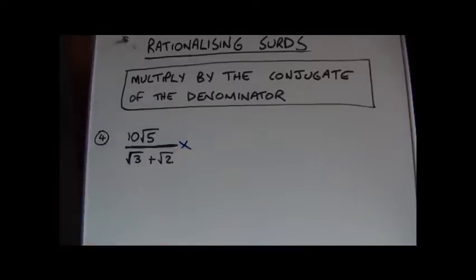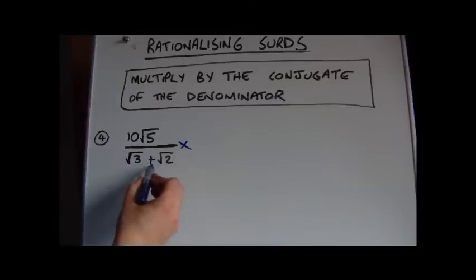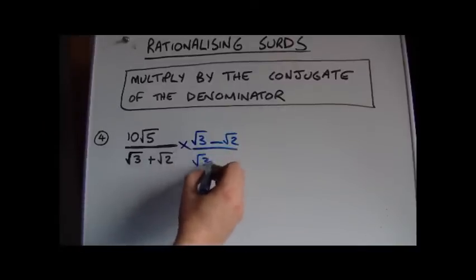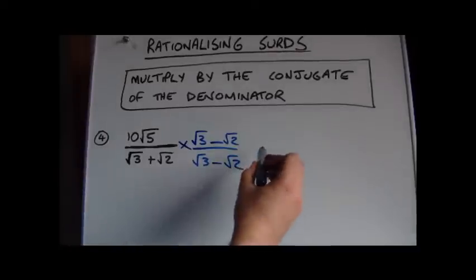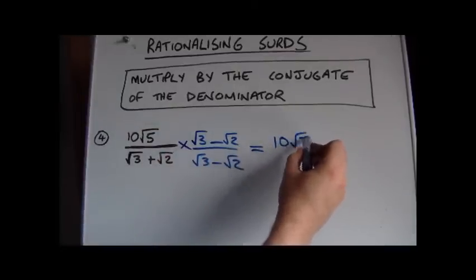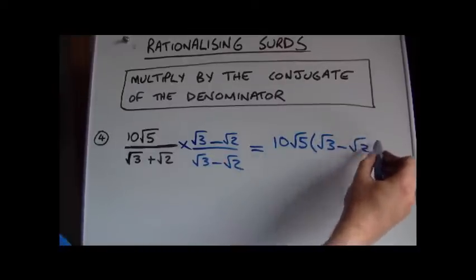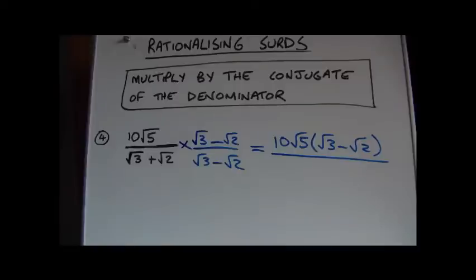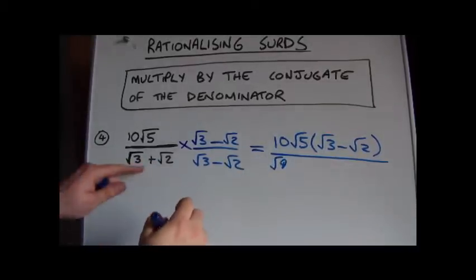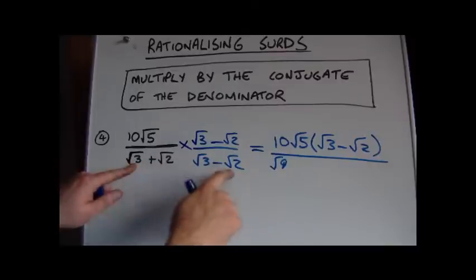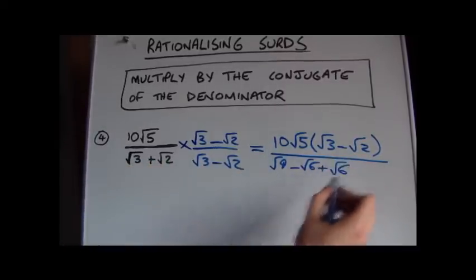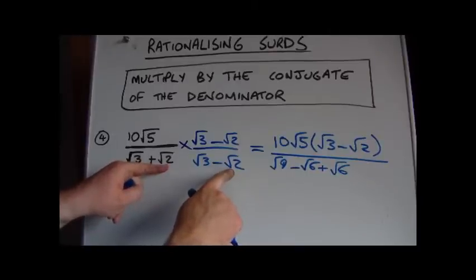One more example using the same method. We multiply the top and bottom by the conjugate of the denominator. The denominator is root 3 plus root 2, so the conjugate changes the plus to a minus: root 3 minus root 2. Expanding the bottom: root 3 times root 3 gives root 9; root 3 times minus root 2 gives minus root 6; plus root 2 times root 3 gives plus root 6; and root 2 times minus root 2 gives minus root 4.